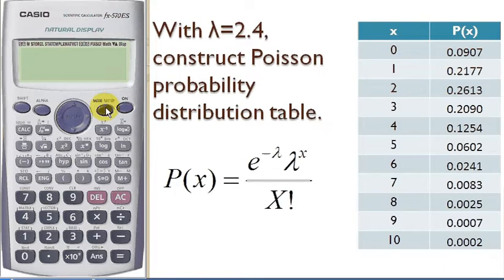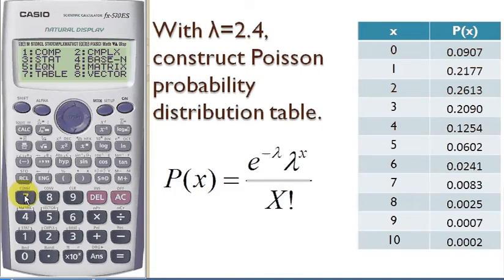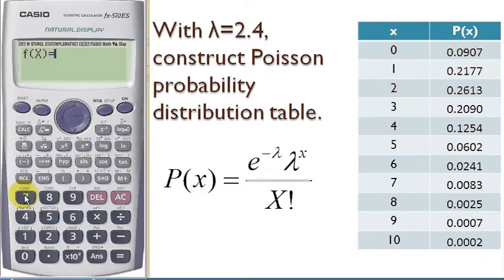First, you press mode and then you select number 7 for table and you key in the formula for Poisson distribution.